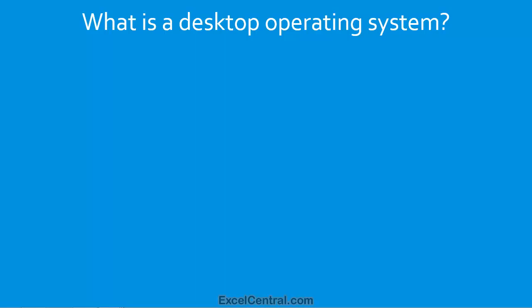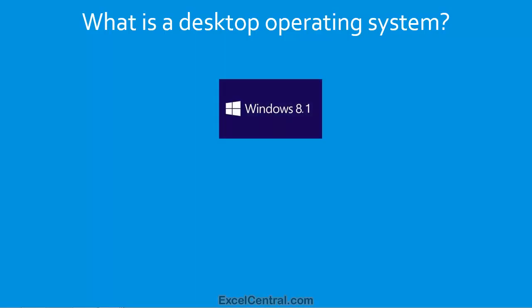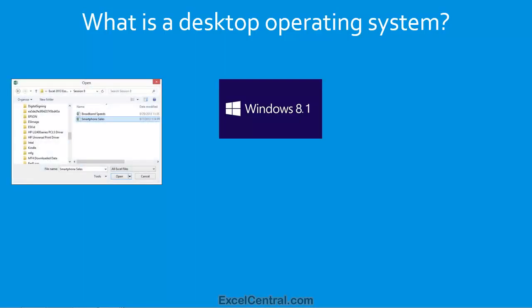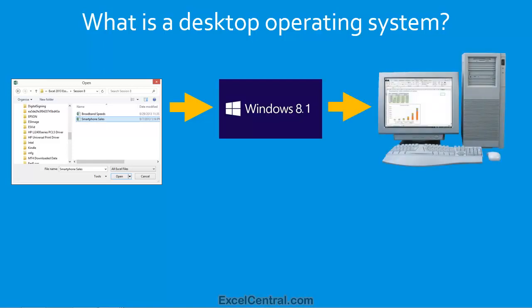So what exactly is an operating system? You're probably using Excel 2013 on a Windows 7 or Windows 8.1 personal computer. Windows is an operating system. When Excel 2013 needs to do something, such as open a file, it does so by sending a request to the Windows operating system. The Windows operating system intimately understands all of the hardware in your computer, so it's able to take the request to open a file and go to the relevant hard drive and open it for you.